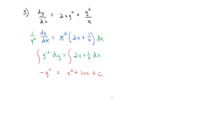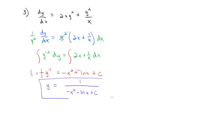Technically we're done if we're okay with an implicit solution, but let's try to make an explicit solution by solving for y. Y to the negative 1 — if I multiply everything by negative 1, a negative constant is still a constant, so I'll leave that as plus c. And y to the negative 1 is 1 over y, so if I take the reciprocal to get y, I do the reciprocal of the other side: y equals 1 over (negative x squared minus the natural log of x plus c). We now have the explicit solution for our differential equation.